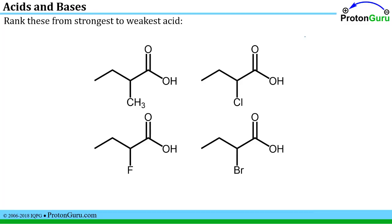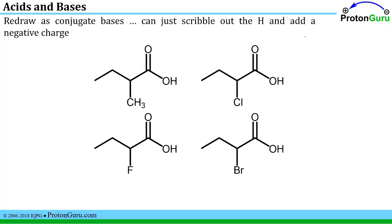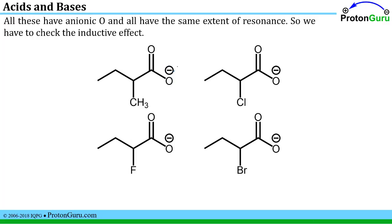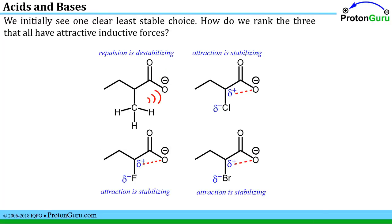Here is another ranking question: rank from strongest to weakest acid. We redraw as conjugate bases and see that all have the minus charge on oxygen and all have the same type of carboxylate resonance. When size, electronegativity, and resonance effects all tie, we look for inductive effects — repulsion or attraction that might stabilize or destabilize these anions. A hydrocarbon branch has bonding pairs that repel lone pairs. But a polar bond creates a partial positive charge, and positive charges attract the negative charge on the oxygen. The species with repulsion gives the least stable conjugate base and is therefore the weakest acid.